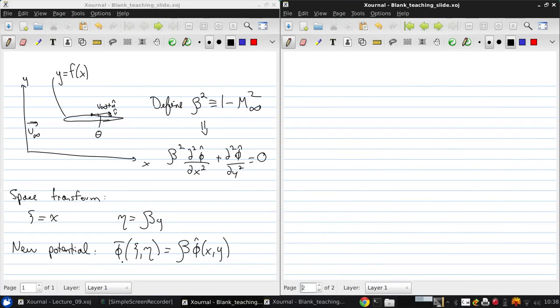Now, we can work out what the derivatives of this new potential are going to look like by starting with using the definitions of the spatial transform and the chain rule to rewrite these derivatives of the phi hat potential.